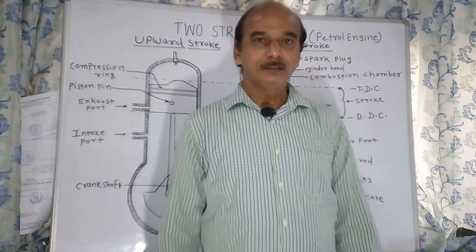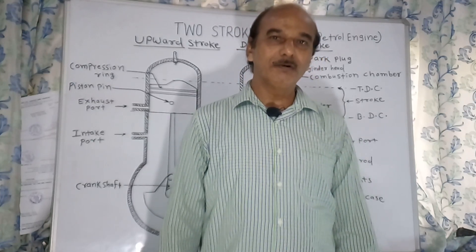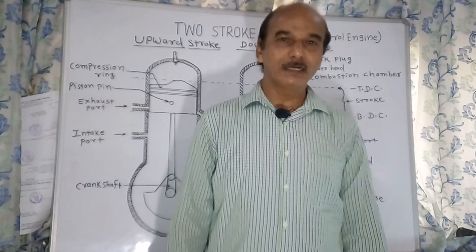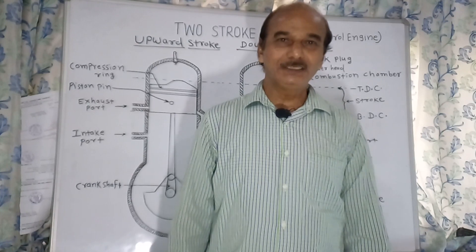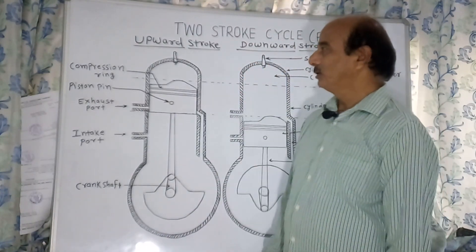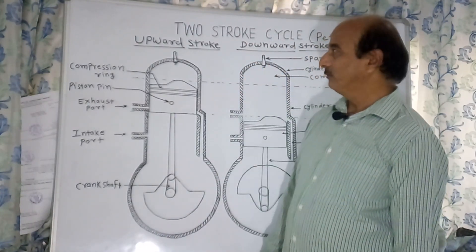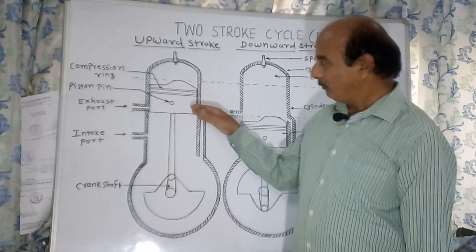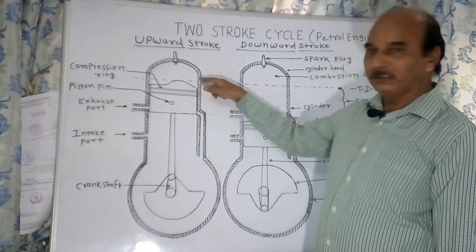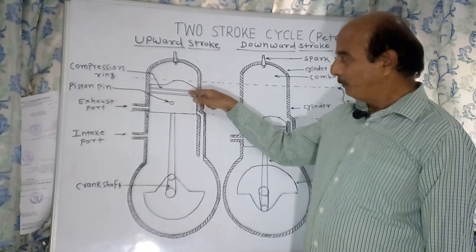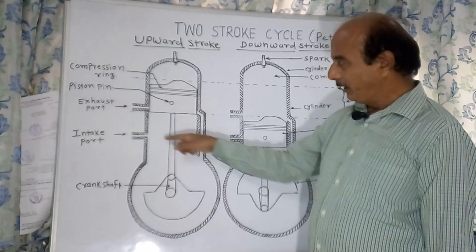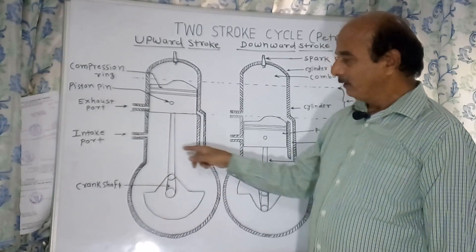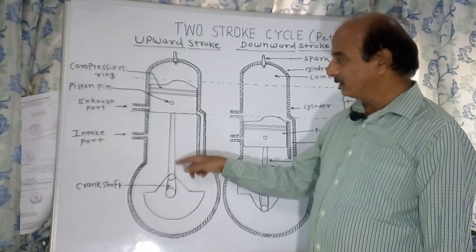The two-stroke cycle is completed within one rotation of the crankshaft, or 360 degrees of the crankshaft. Now we see how the strokes work. First is the upward stroke: the piston moves from BDC to TDC. Below the piston, the intake port remains open and a vacuum is created in the crankcase.